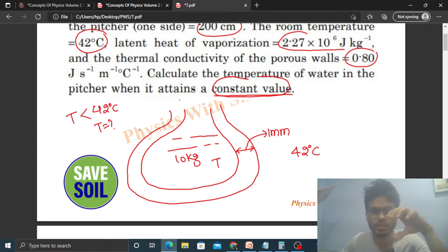Why is this? Because the temperature of water in the pitcher is less than the outside temperature - we keep water in a pitcher to cool it. Outside temperature is higher, inside temperature is lower, so heat will flow from outside to inside.